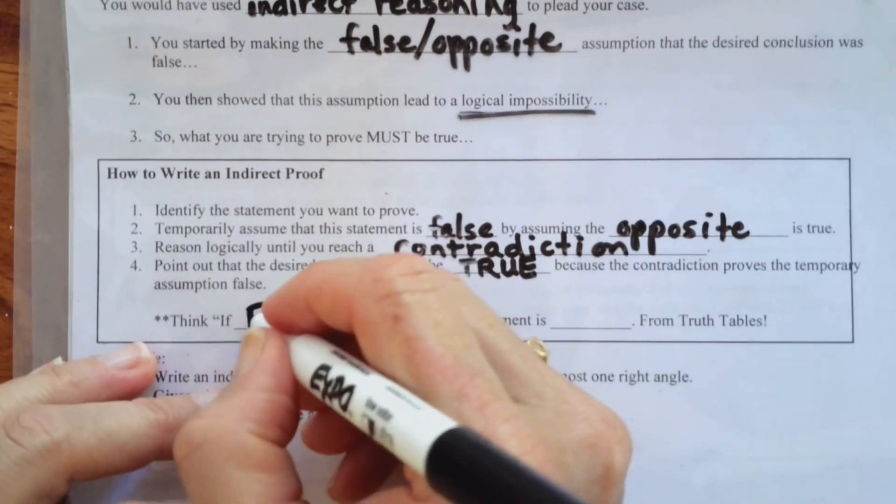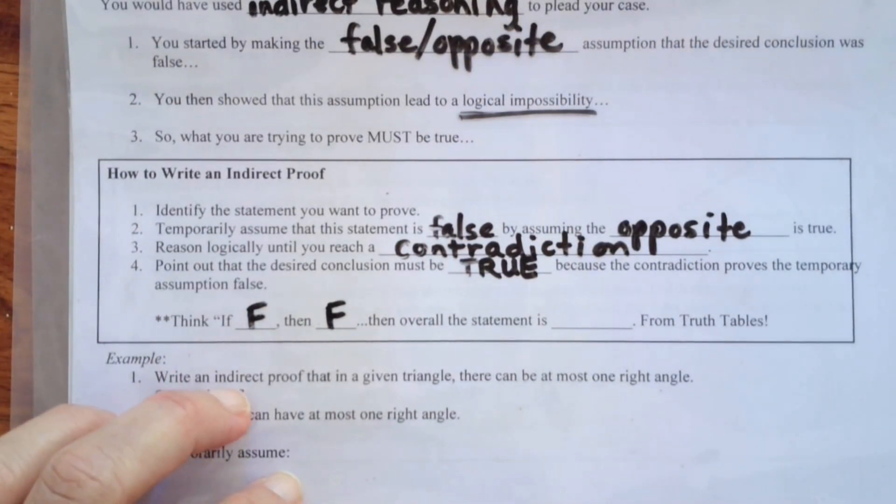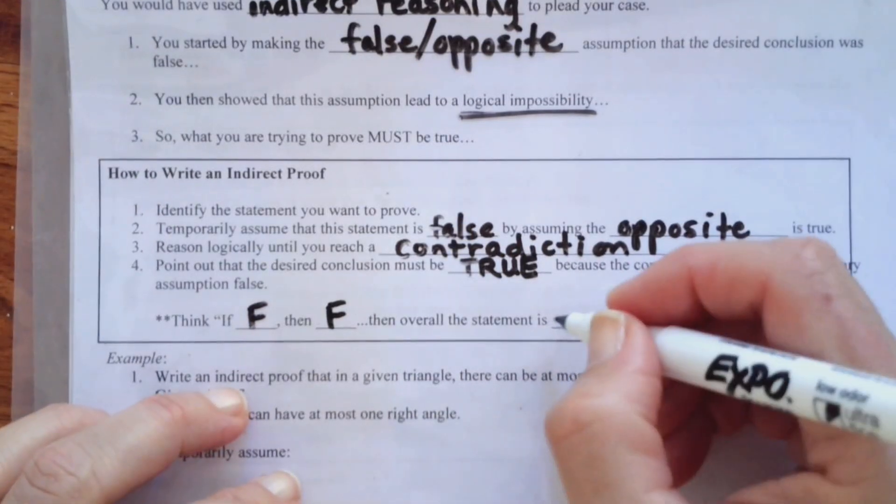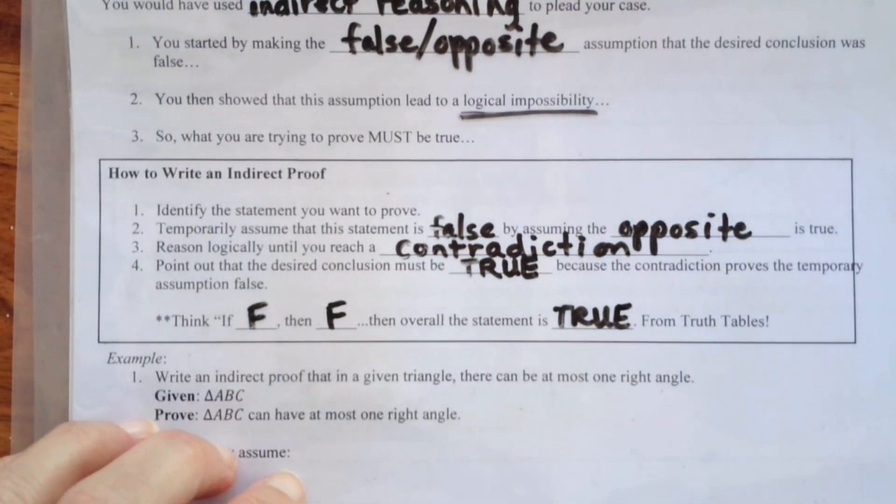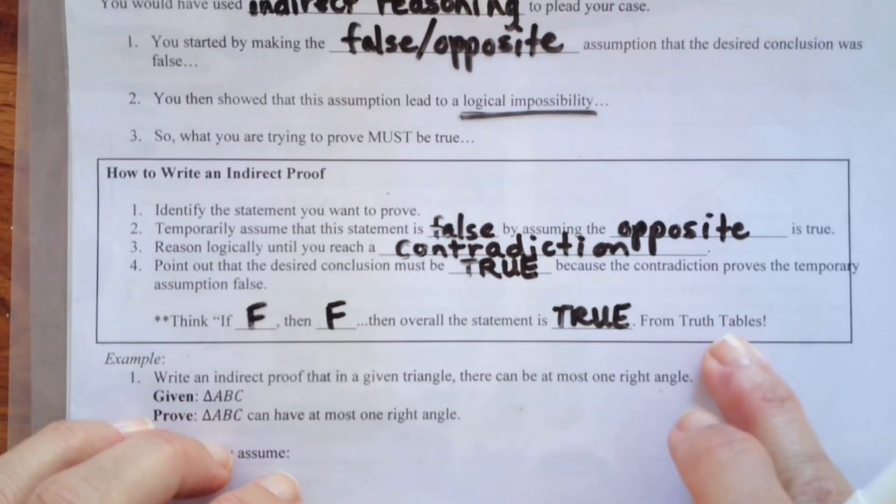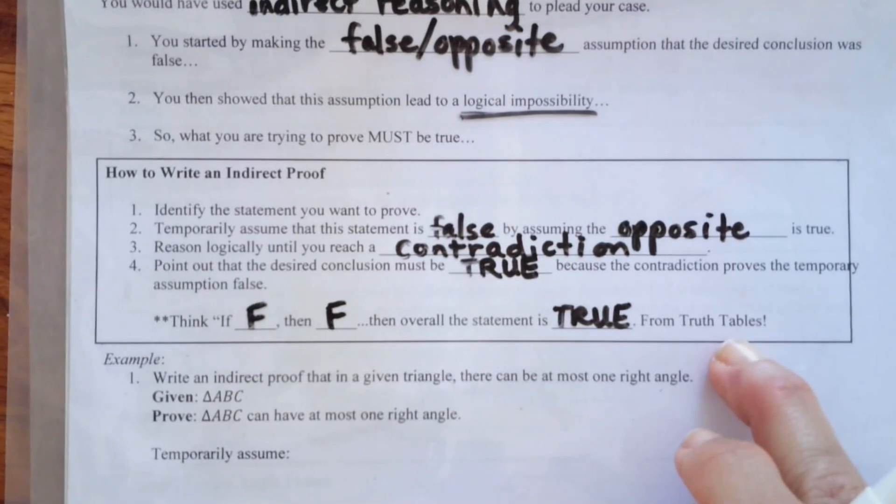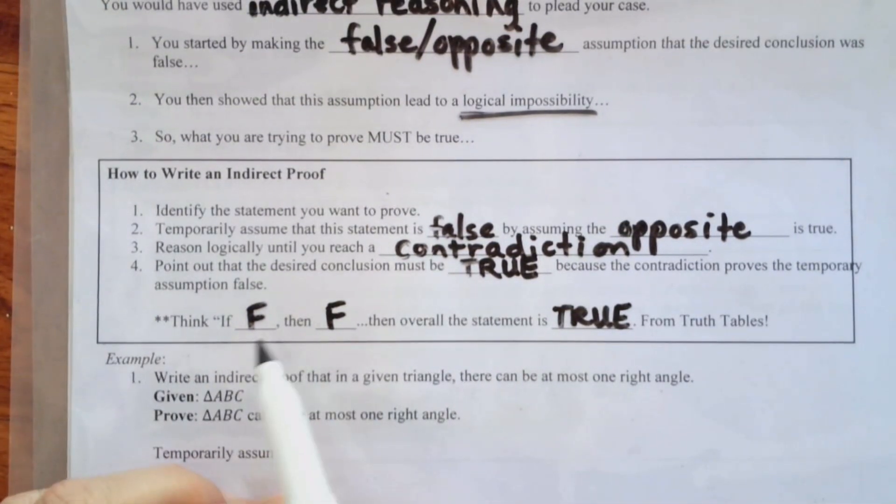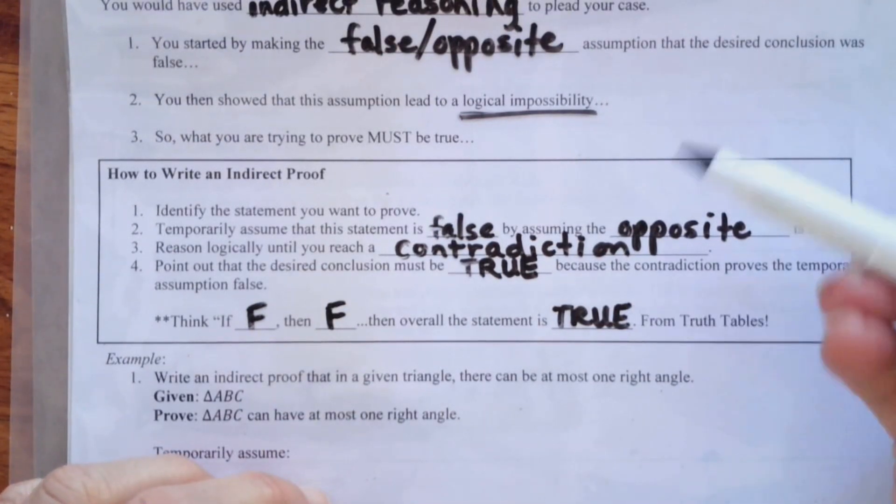So, here's what you think. If false, then false. Do you remember when we did logic tables? Because if that's the case, then overall, the statement is true, logically speaking. Actually, we didn't do all of the logic chapter, but this is how it works. If you prove something that you assumed was false can't happen, then it must be true.